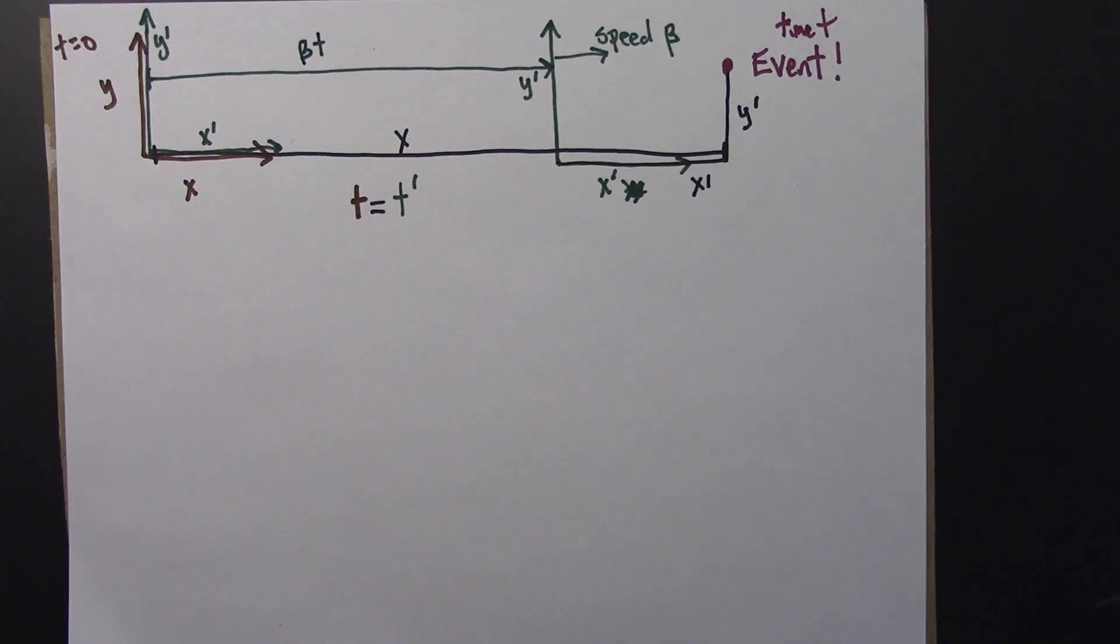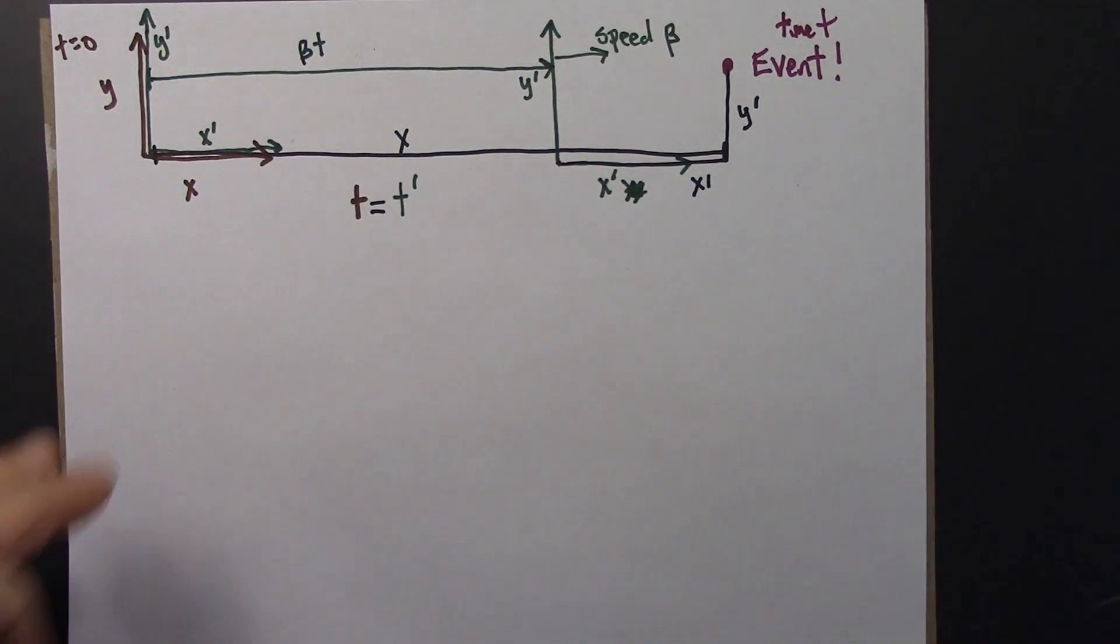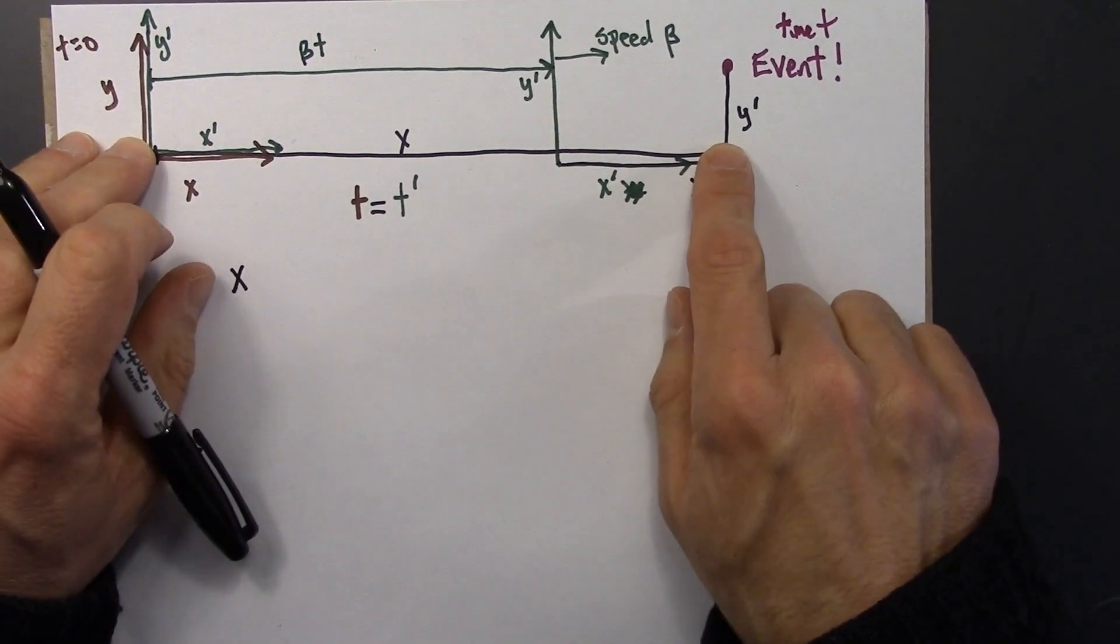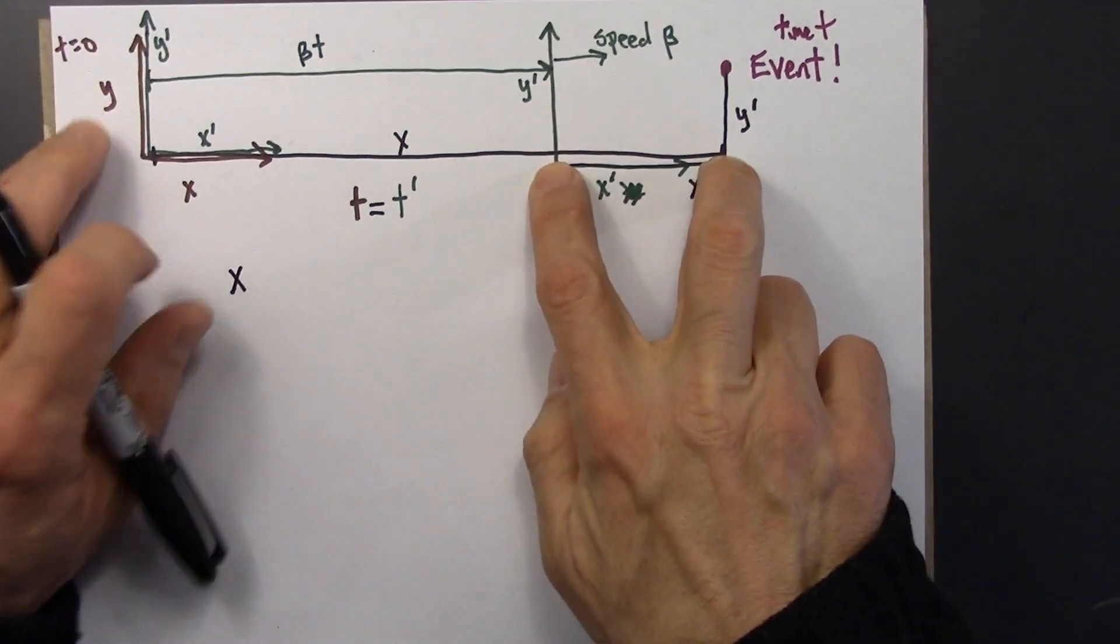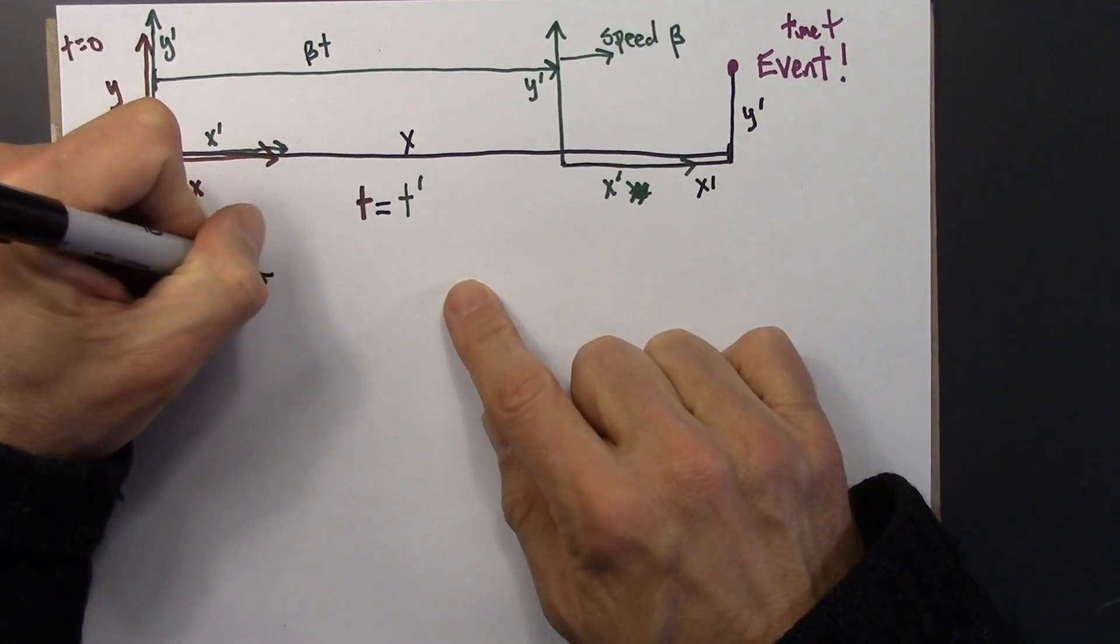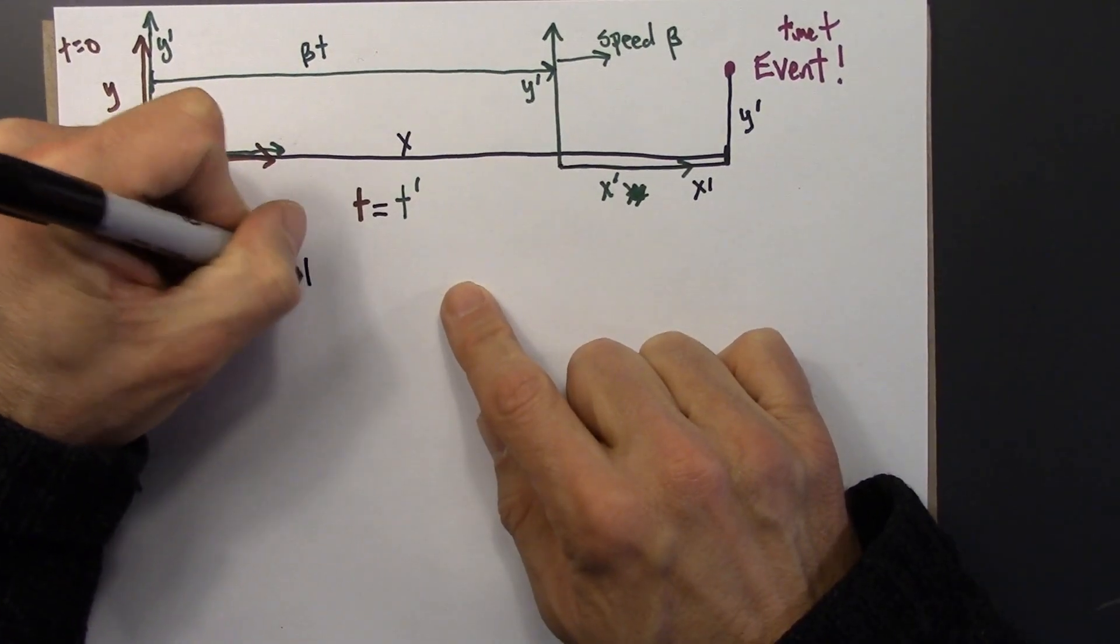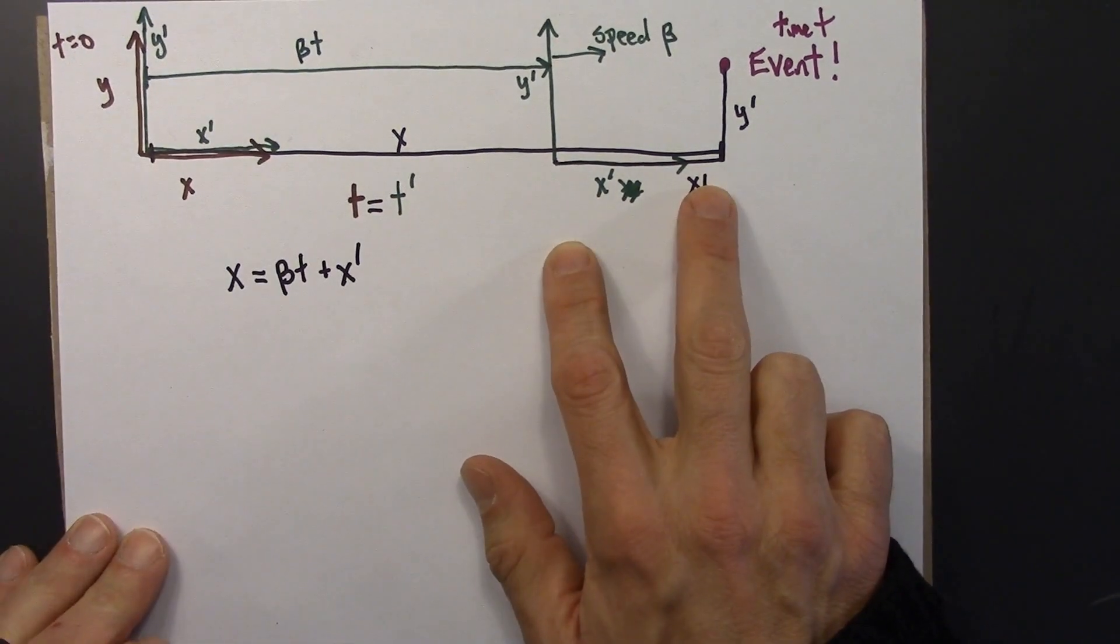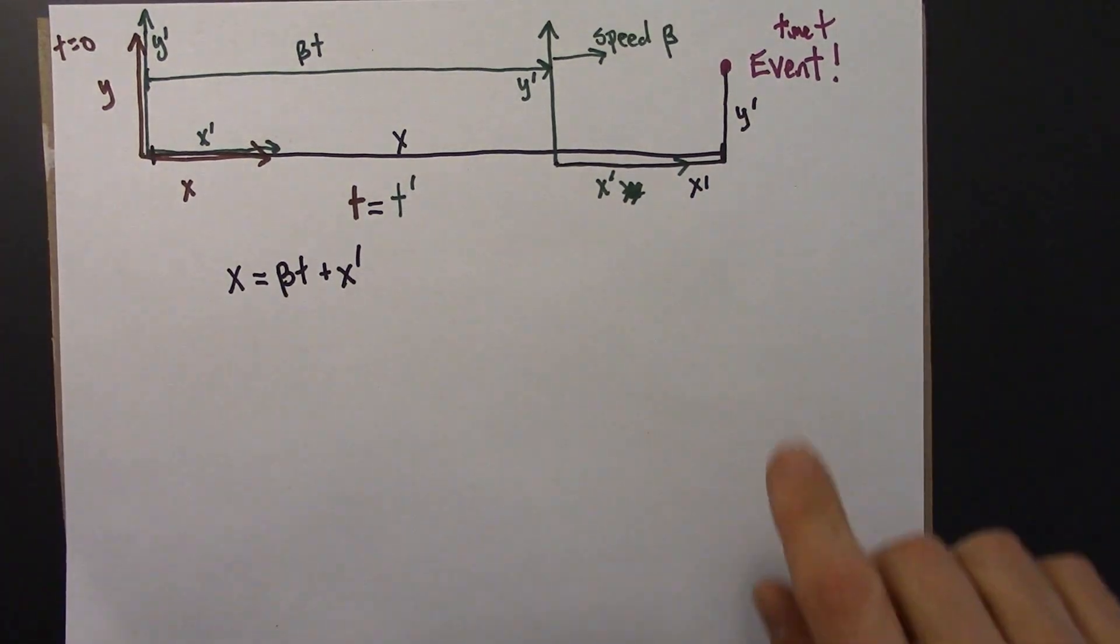So here's what that means. So that means that the distance x is just this plus that. This is beta t, and this is x prime.